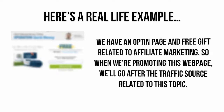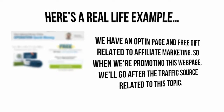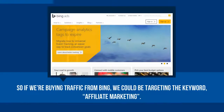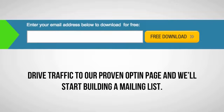Here's a real life example. We have an opt-in page and free gift related to affiliate marketing. So when we are promoting this webpage, we will go after the traffic source related to this topic. If we are buying traffic from Bing, we could be targeting the keyword 'affiliate marketing,' driving traffic to our proven opt-in page and we will start building a mailing list.